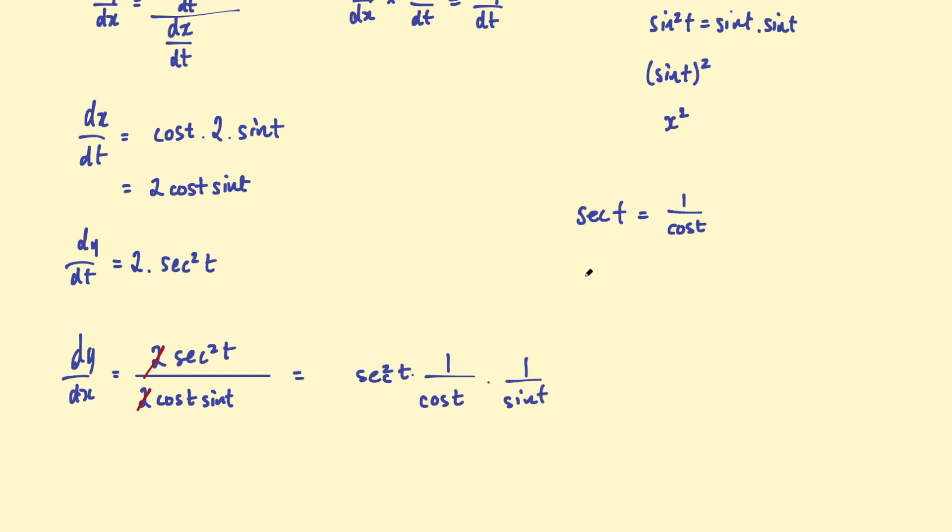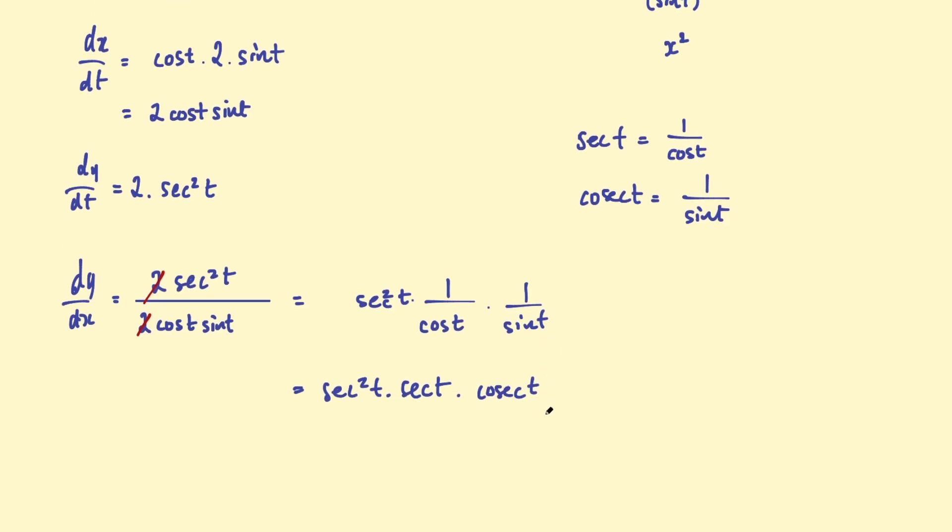Another identity we could use here is the cosecant function. That's equal to one over sine t. So another way to write this expression is sec squared t multiplied by sec t, because one over cosine t is sec t, multiplied by the cosecant of t. And then we could also write it as sec cubed t times cosecant t. So that's another way to give your final answer.